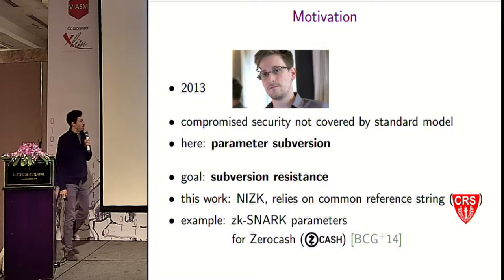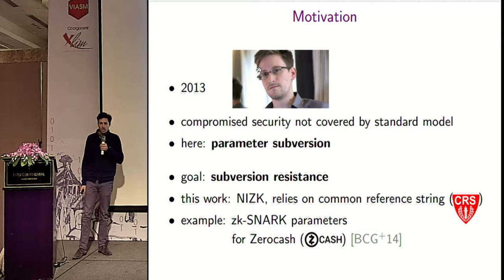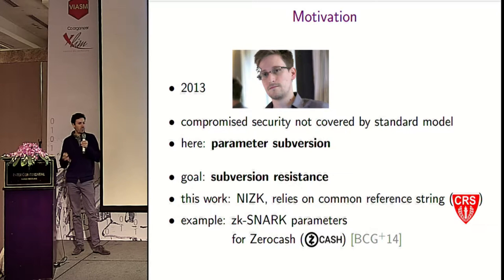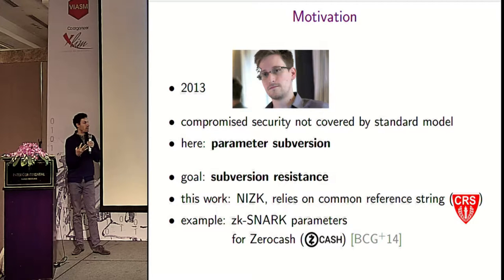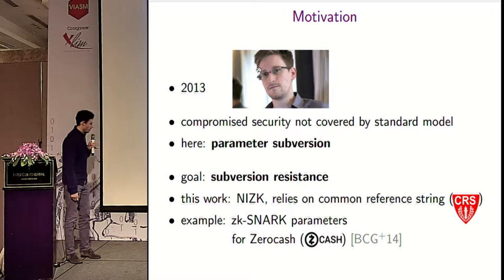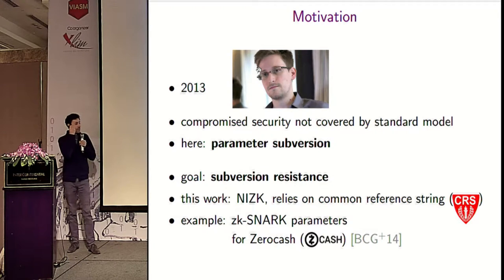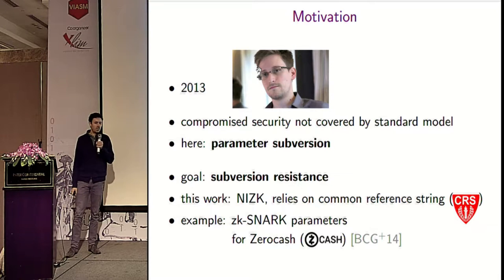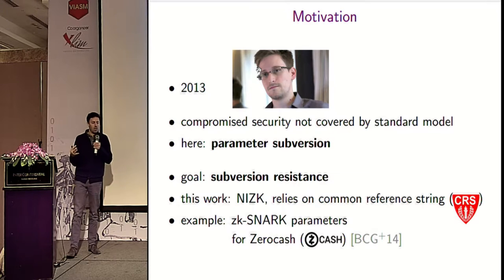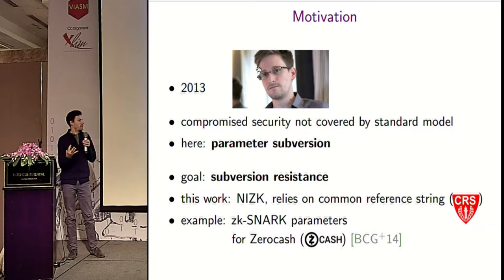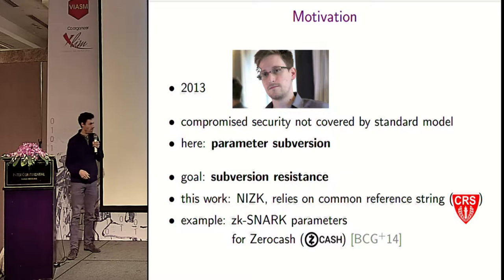We look at a different cryptographic primitive: non-interactive zero knowledge proofs, which is a central primitive that inherently depends on trusted parameters because they need a common reference string set up in a trusted way. A recent example is the anonymous cryptocurrency Zcash, which uses zero knowledge SNARKs, and there has been a lot of discussion about whether these parameters were set up in a trusted way.